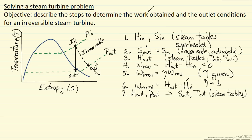That basically completes the procedure. The idea is we first do the calculation for the reversible process, then we take advantage of information about how irreversible the process is — by knowing the efficiency — to calculate the conditions for the irreversible process.